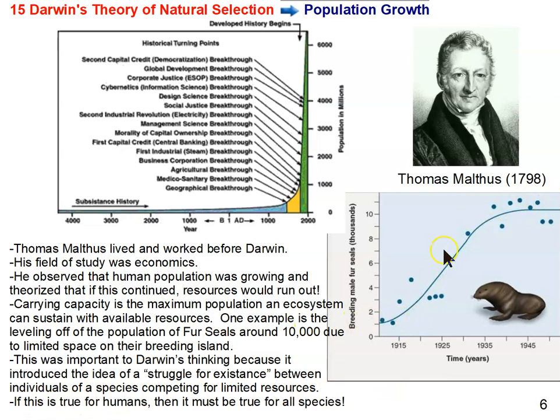Darwin took this idea that Malthus was applying to humans and applied it to all species. Here's the graph of human population growth over the last couple thousand years — it's shot up big time, growing exponentially and still going up. Darwin figured: if this is true for humans, if we need to worry about humans running out of resources and competing against each other for them, then we must also apply that to other species as well. That was another piece of the puzzle that fed into Darwin's thinking and coming up with the whole idea of natural selection.